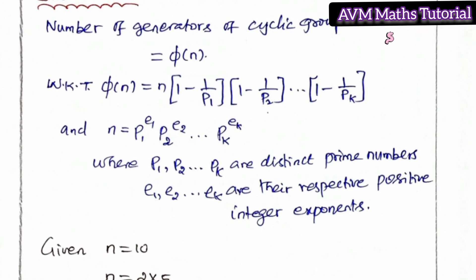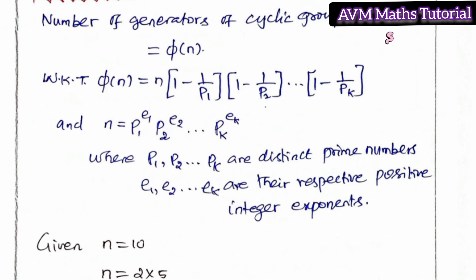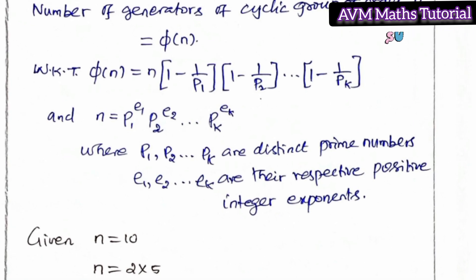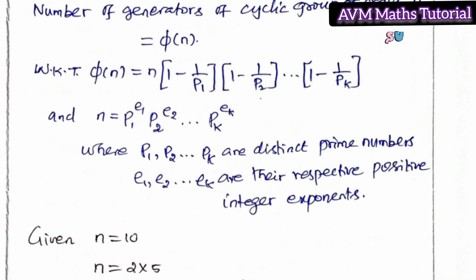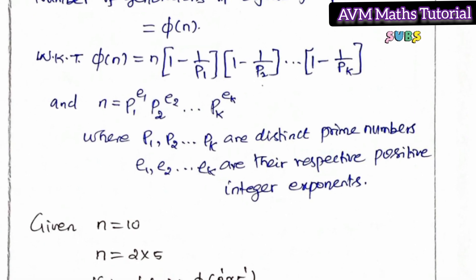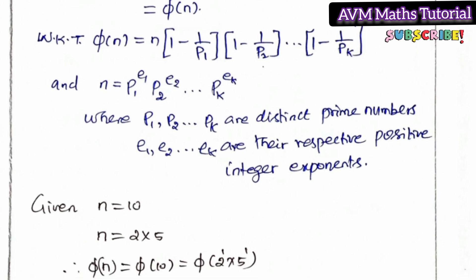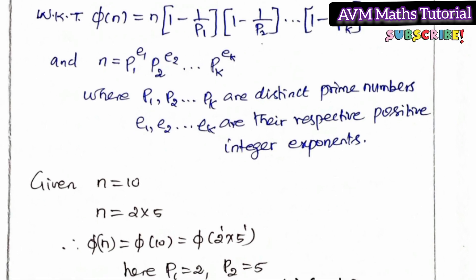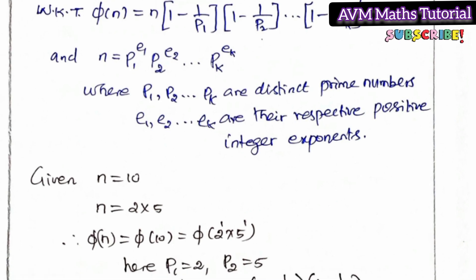The power values are prime numbers. Now the number of generators of a cyclic group is computed using these prime factor values. For the given problem, the cyclic group has order n.